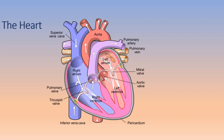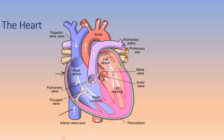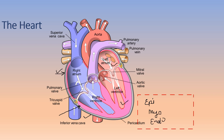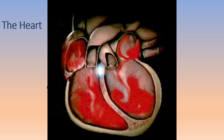The heart has four chambers: the upper two are known as the atria and the lower two as the ventricles — the right atrium, right ventricle, left atrium, and left ventricle. The heart is enclosed by three layers: the epicardium, myocardium, and endocardium, together known as the pericardium. The pericardium is filled with pericardial fluid, which reduces friction between the layers as they rub during each heartbeat.